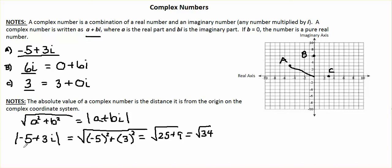How would we do the same thing for 6i? We would take the absolute value of 6i. We have no real portion to this. So when we square 0, we'll just get 0 back. If we square 6, we get 36. The square root of 36 is 6, which is pretty much what we started out with. And you can see right here, the distance from the origin is 6 units.